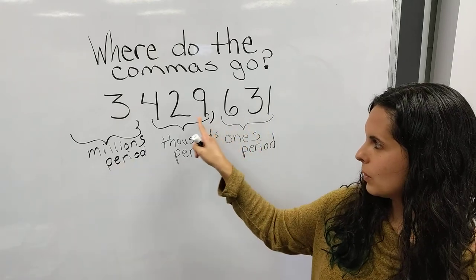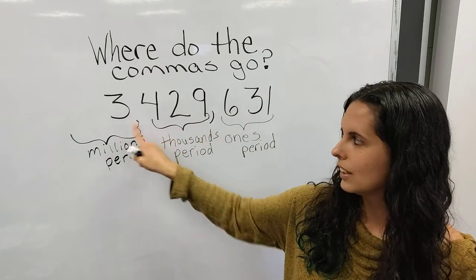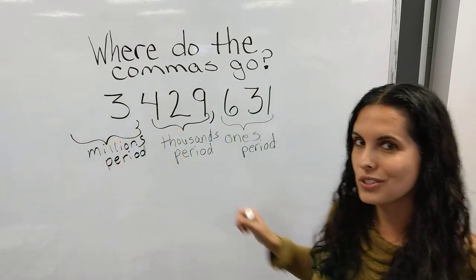One, two, three, comma, one, two, three, comma, one, two, three, comma, and you'd move on to trillions.